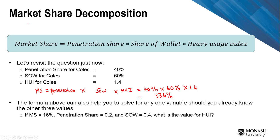For example, if market share is 16%, penetration share is 20%, and SOW is 40%, what is the value of HUI? You know that 16% equals penetration share of 0.2 times SOW of 0.4 times the unknown HUI.